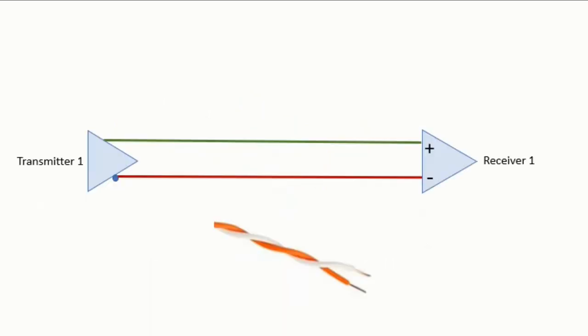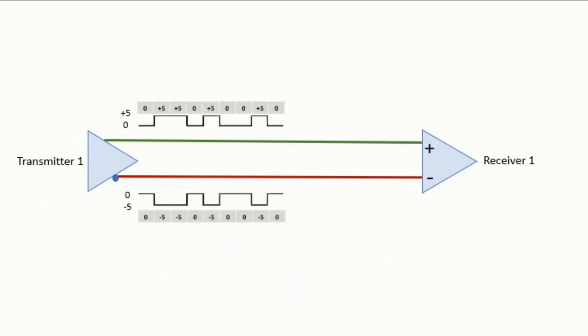So how can we eliminate crosstalk? Well, to eliminate crosstalk each transmitter will have to use two conductors instead of one conductor to transmit data. The data to transmit is sent in the first conductor. The second conductor will carry the opposite copy of the data transmitted in the first conductor.